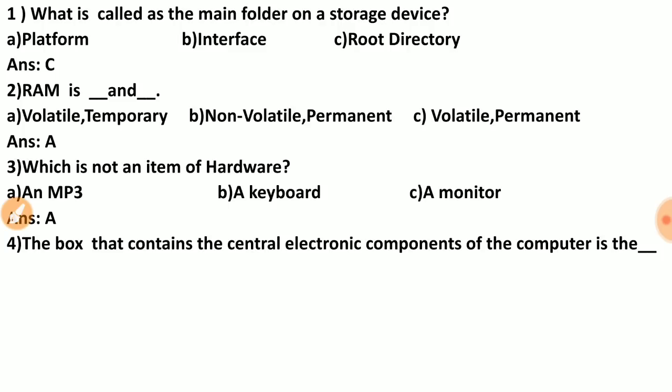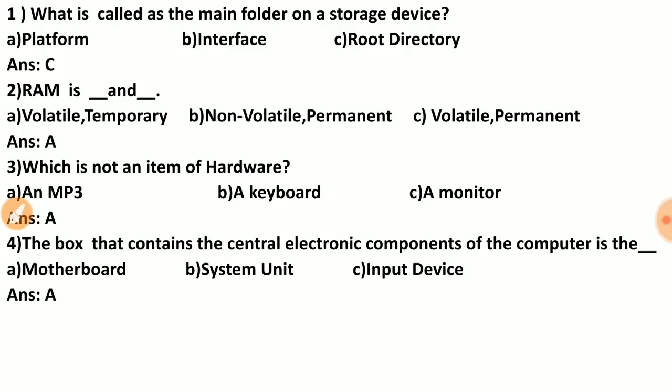Question four: the box that contains the central electronic components of the computer is called what? Options are: motherboard, system unit, input device. The correct answer is A — motherboard. All the important electronic components are housed in the motherboard.